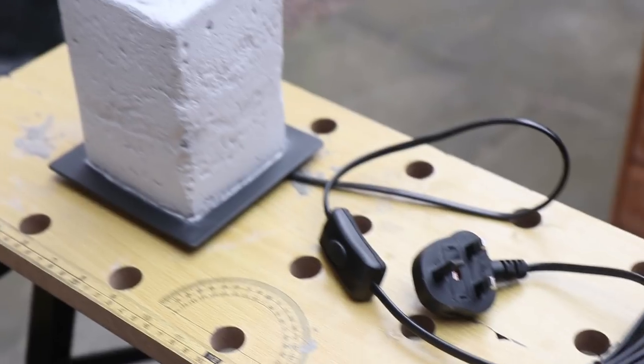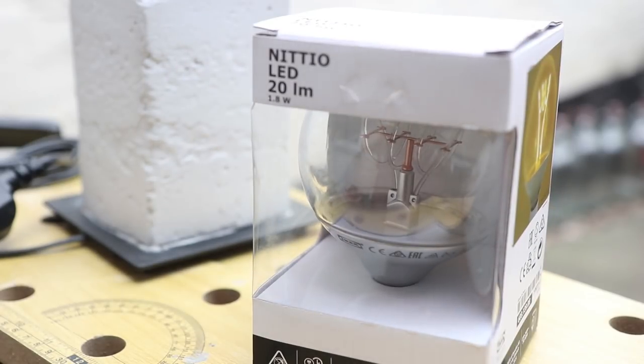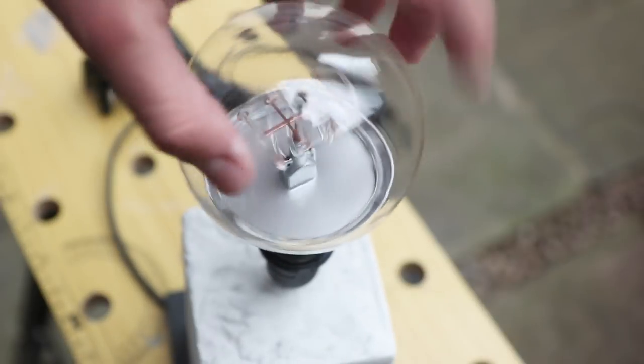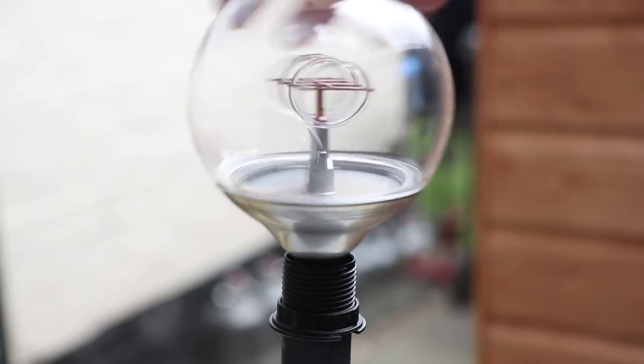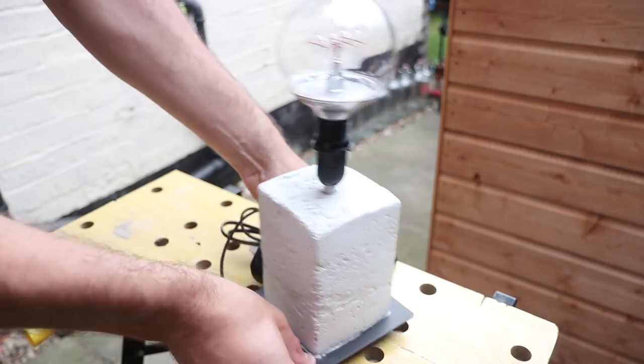Remember, always consult a qualified electrician if you're ever in doubt when dealing with electrics. Now for the final touch, an uber funky lightbulb. These ones are also available from IKEA. Find somewhere to put your funky new lamp and then let there be light.